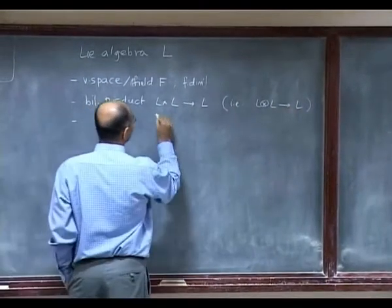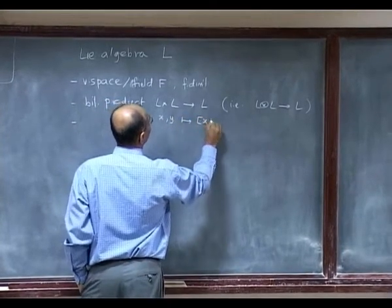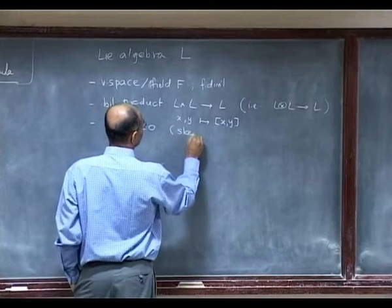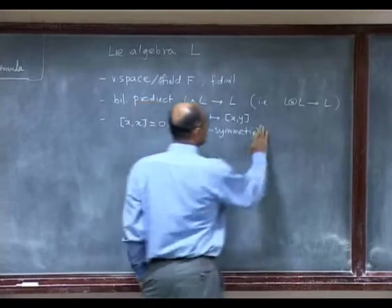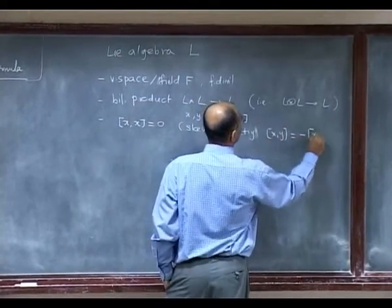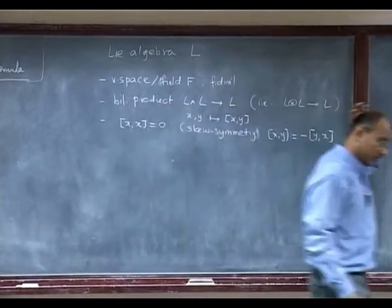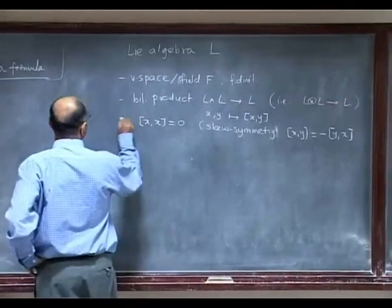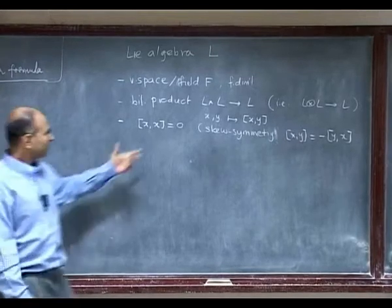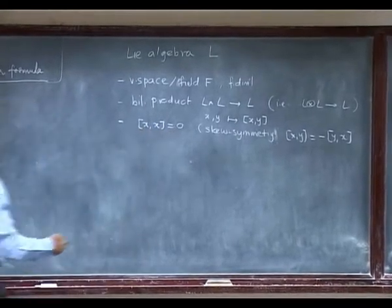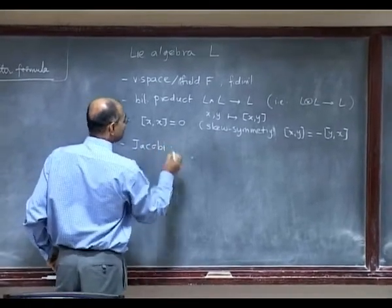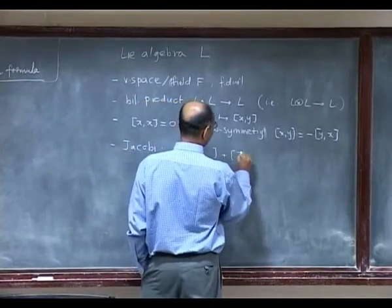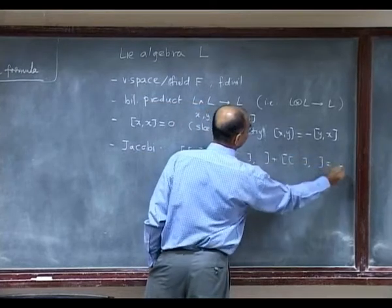This is x, y goes to what we call the bracket [x, y], with the property that bracket of anything with itself is 0. This is really skew-symmetry, which is to say that bracket [x, y] is minus bracket [y, x]. How are these two related? You expand bracket [x+y, x+y] with itself and use bilinearity. It's if and only if the characteristic is not 2. If the characteristic is 2, then you actually prefer this.